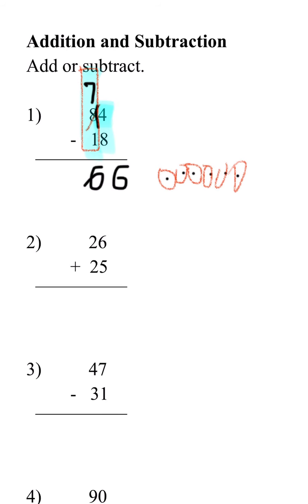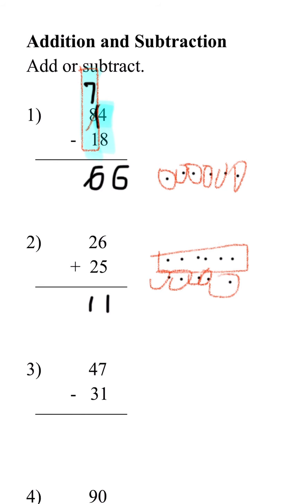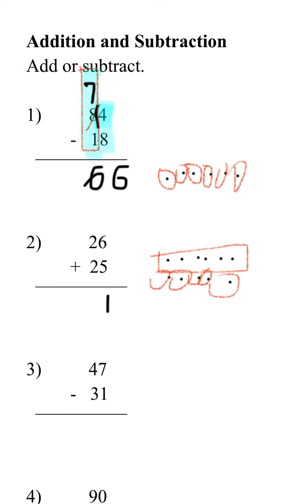Number 2, we have 26 plus 25. We're adding 6 plus 5, which gives us 11. So because this 1 is in the tens place and it's bigger than 9, it's going to go above the 2. That's going to be 1. And we're going to do 1 plus 2, which is 3, plus 2 is 5. So we're adding all the tens place. The answer is 51.